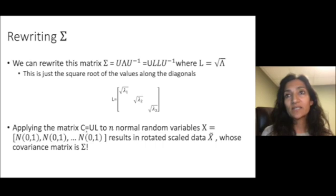Applying the matrix C, which is equal to just U times L to n normal random variables, results in a rotated and scaled data matrix X tilde, whose covariance matrix is actually sigma.